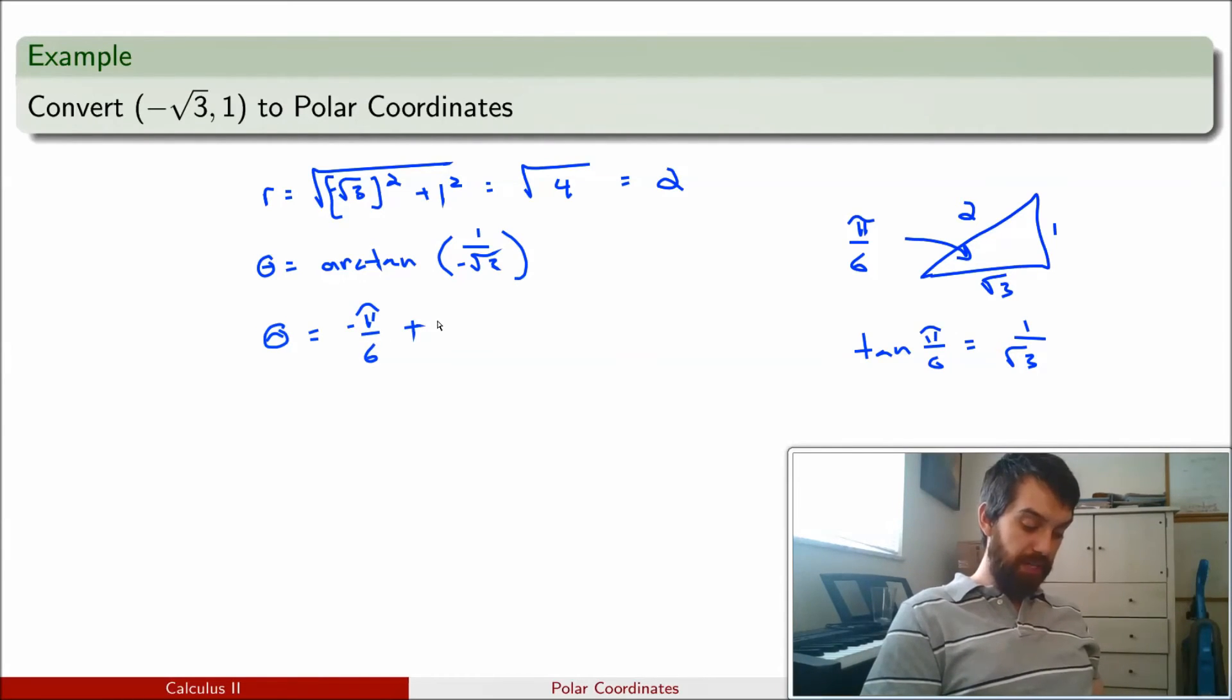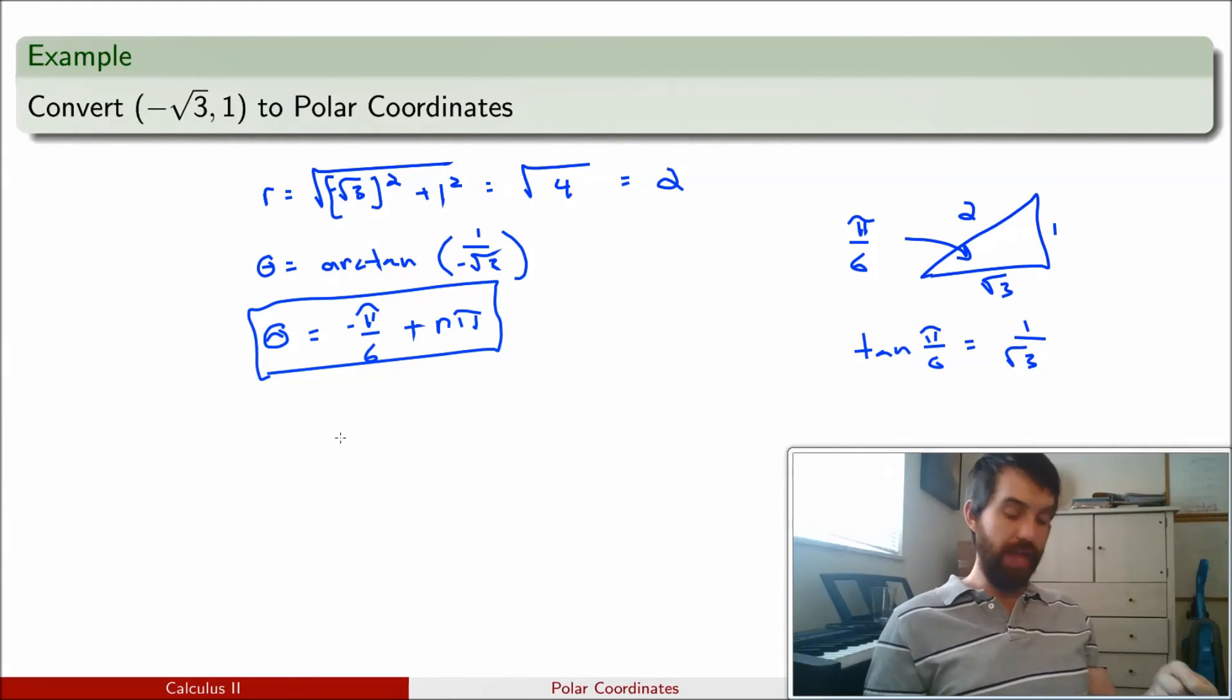And then, because of the periodicity, plus n pi. So, for any integer value n, this is going to give you a solution to the formula theta is equal to arctangent of 1 over minus the square root of 3.